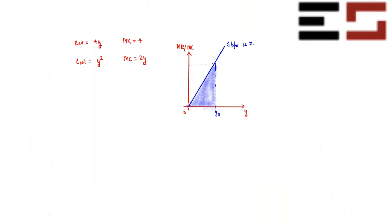The height of this triangle is 2·y-naught and the base is y-naught, so the area is one-half times base times height, which gives y-naught squared — exactly equal to the cost at y-naught.